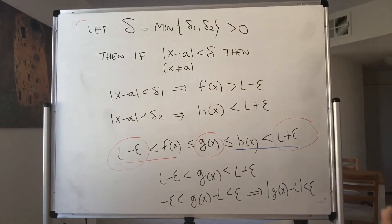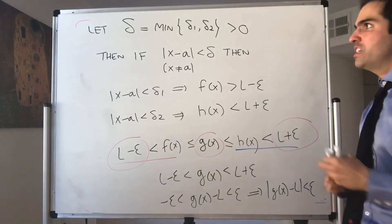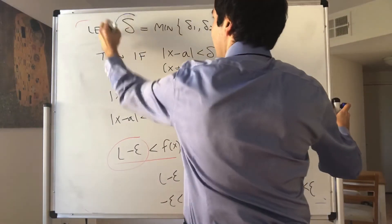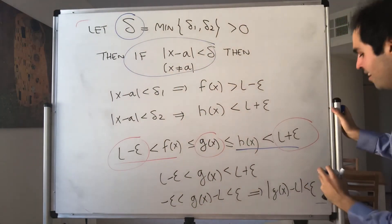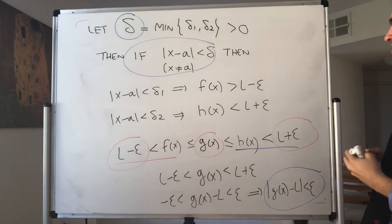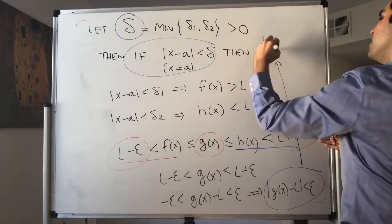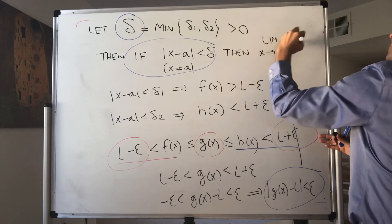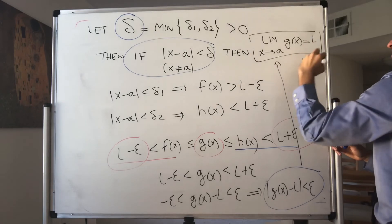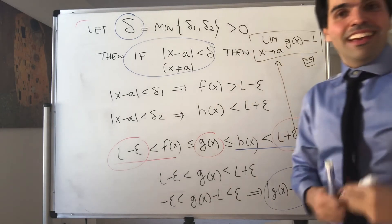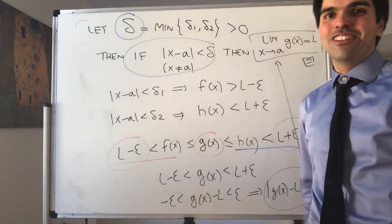And therefore we're done. Why? Because we assumed epsilon was arbitrary. We found a delta such that if |x minus a| is less than delta, then |g of x minus l| is less than epsilon. And therefore we can conclude that the limit as x goes to a of g of x is equal to l. And therefore we're done — we can squeeze ourselves because we're so happy that we proved this.